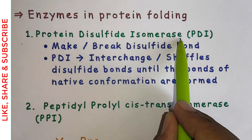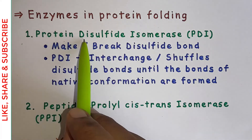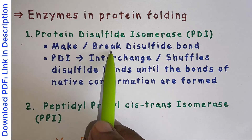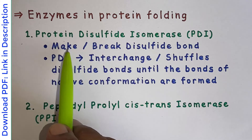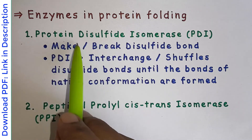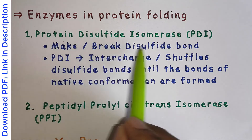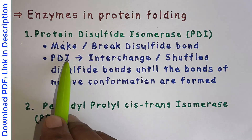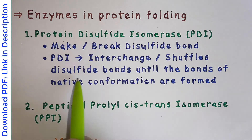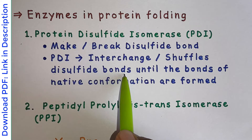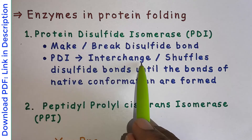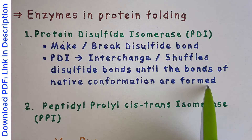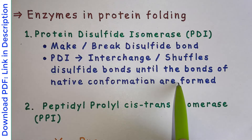Protein disulfide isomerase, as its name suggests, is a disulfide isomerase — it can both make and break disulfide bonds. The same enzyme makes and breaks disulfide bonds, which are totally opposite actions. PDI interchanges and shuffles disulfide bonds because it can make and break them, and keeps doing so until the bonds of the native conformation are formed, thereby helping in protein folding.